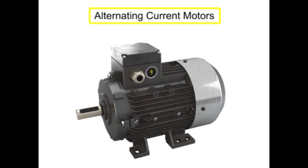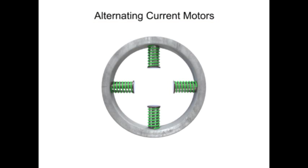Alternating current motors function based upon the principle of having polarities within a rotating magnetic field. Inside an AC motor are housed stationary electromagnetic coils or stators positioned around a movable magnet called a rotor.